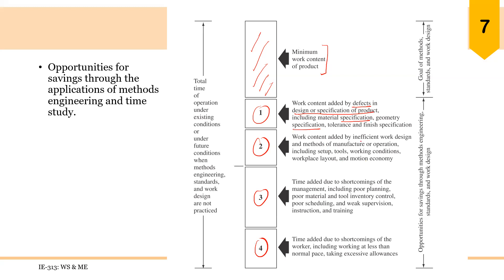Some time is added by inefficient work design and methods of manufacturing or operations, including setup, tools, working conditions, workplace layout and motions economy. So we discussed these aspects briefly when we discussed different types of waste. Because of poor layout design, the waste of transportation is there, and because of poor application of principles of motion economy, there is a waste of motion. So some time is wasted because of this poor work design.